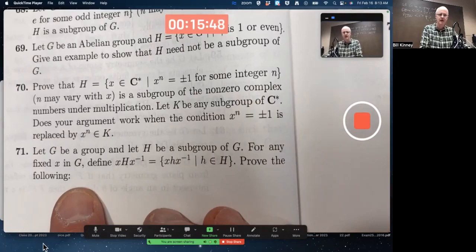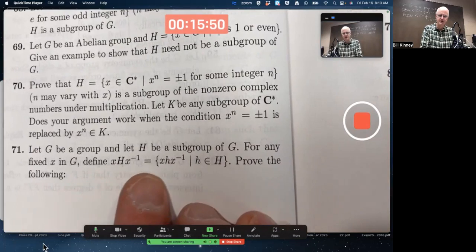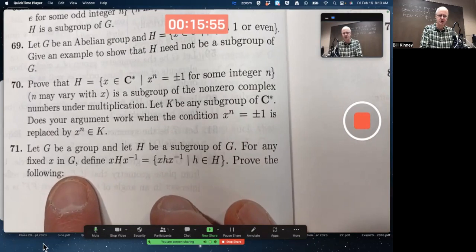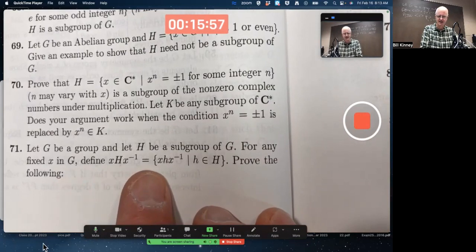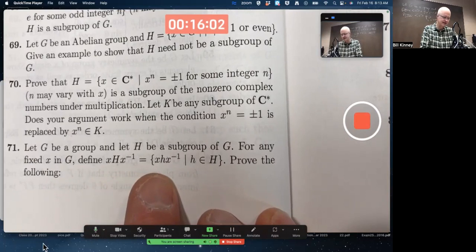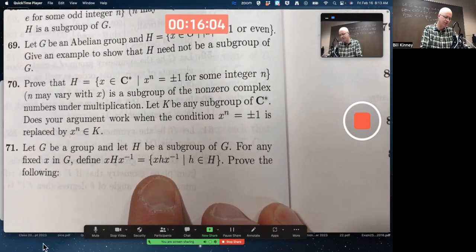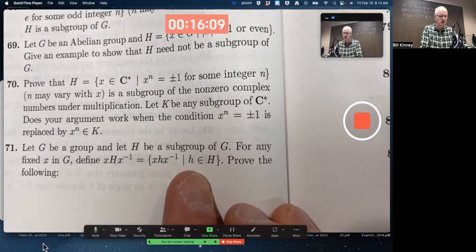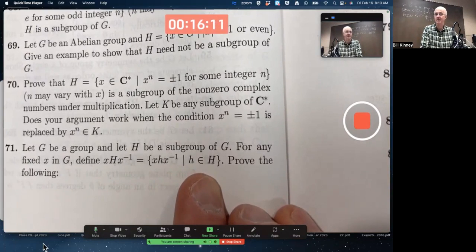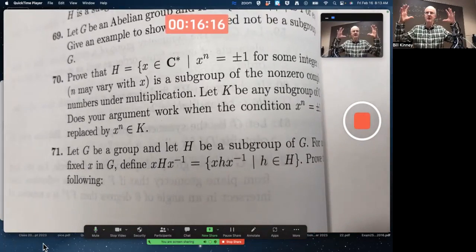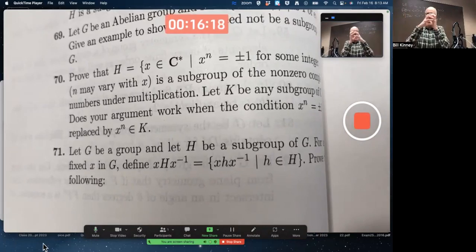The next example that I'd like to do is a problem. Let G be a group and let H be a subgroup of G. For any fixed element x in G, define this set xHx^(-1) to be the set of all products of the form x times little h times x inverse as h ranges over capital H. So you got a group G. That's the big group. You got a subgroup H.